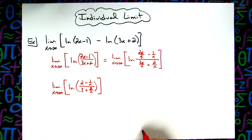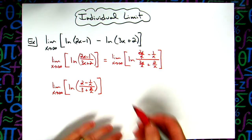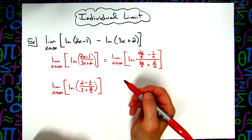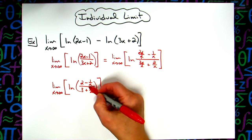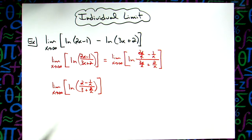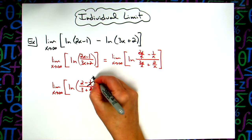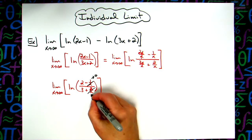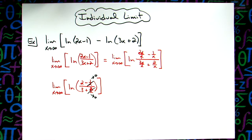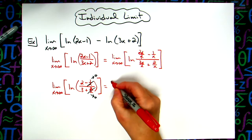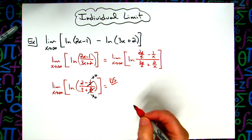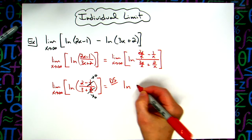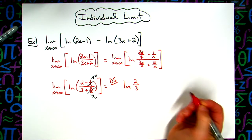Alright, now I can do a direct substitution. When I do that direct substitution, basically this goes to 0 and this goes to 0. So for that direct substitution, the limit notation is going to go away. I will have the natural log of just 2 thirds.